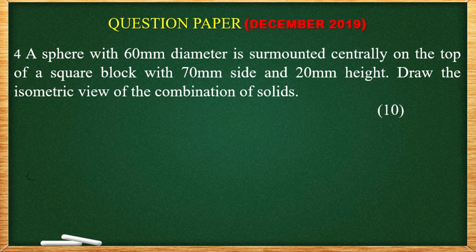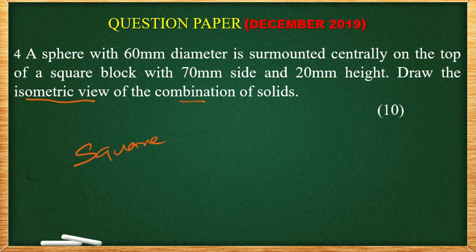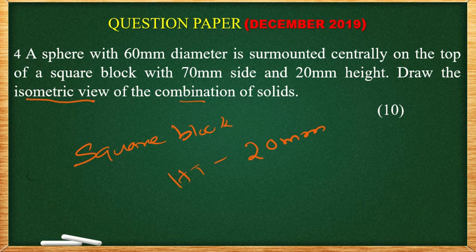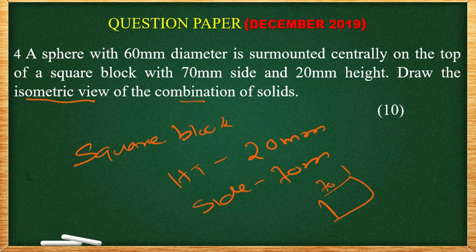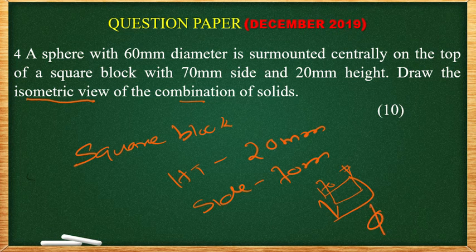This question is from the isometric projection topic. Isometric view is a new one — draw the isometric view of the combination. We are looking at the square block with side 70 mm and height 20 mm. On top of the square block, we have a sphere with 60 mm diameter.